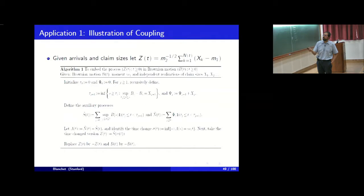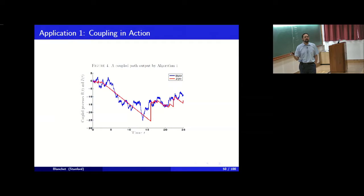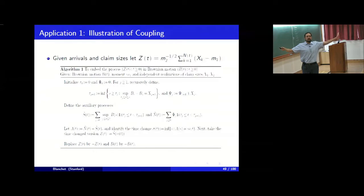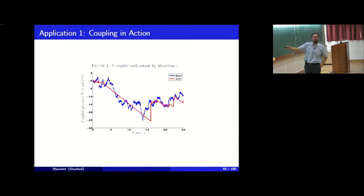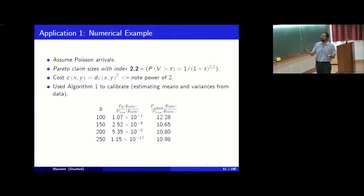If the data is compound Poisson but you don't know the distribution of X_k, only that arrivals are Poisson, there is an algorithm that embeds this process into Brownian motion without knowing the distribution of X_k. This gives a coupling you can use to estimate Delta. This is not the Skorokhod coupling — that would require knowing the distribution — but it is asymptotically equivalent and data-driven.